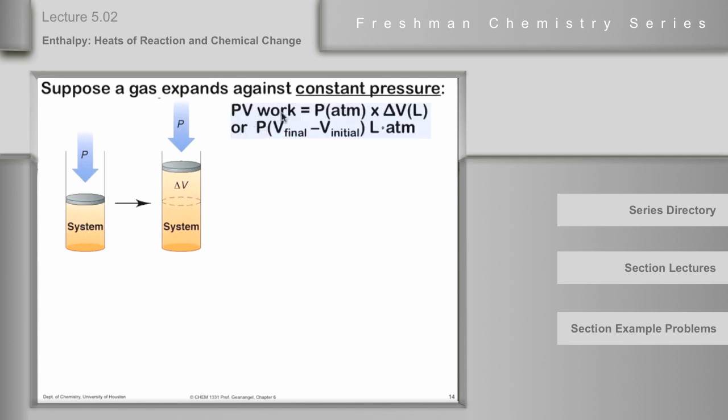The PV work that's done at constant pressure is equal to the pressure in atmospheres times delta V in liters, or the pressure in atmospheres times the quantity V final minus V initial. That's given in liter atmospheres. So the work is done on the surrounding by this expanding gas, and the magnitude of the work is P delta V in liter atmospheres. And the sign is negative because the system, the gas, is doing work on the surroundings, pushing that piston back.